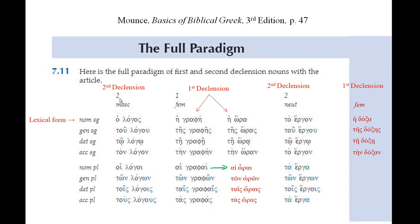This chart shows second declension masculine, second declension neuter, and first declension feminine. As mentioned previously, there are some second declension feminines such as 'hodos' (way), and some first declension masculines like 'prophetes' and 'mathetes' — prophet and disciple. But for the most part, masculines will be second declension, feminines will be first declension, and neuters will often be second declension.